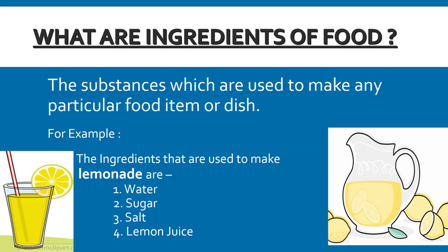Now here is a term — ingredient — which is related to food. The substances which are used to make any particular food item or dish are termed as ingredients. For example, the ingredients that are used to make lemonade are water, sugar, salt, and lemon juice.